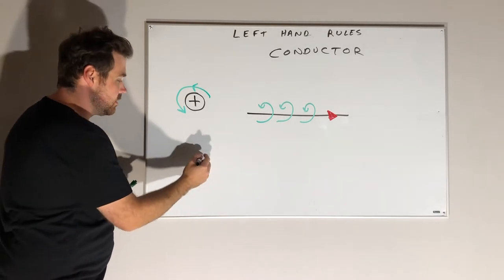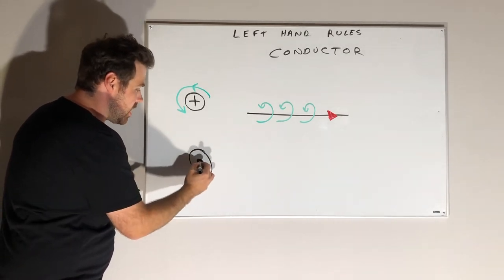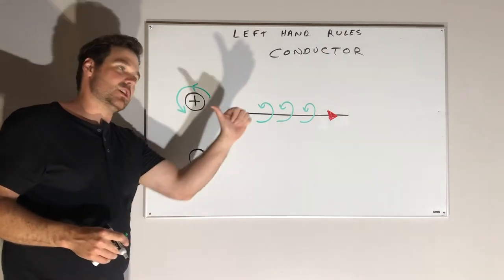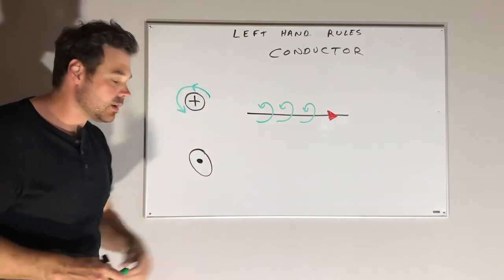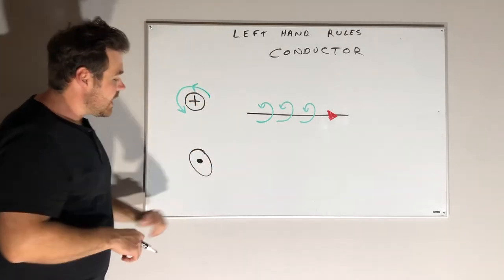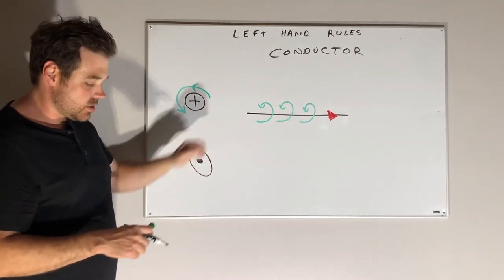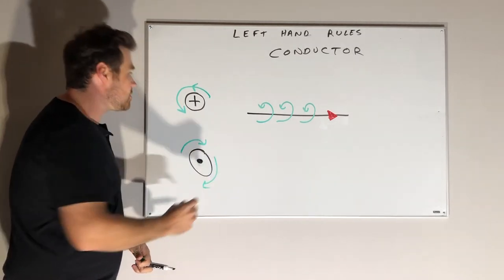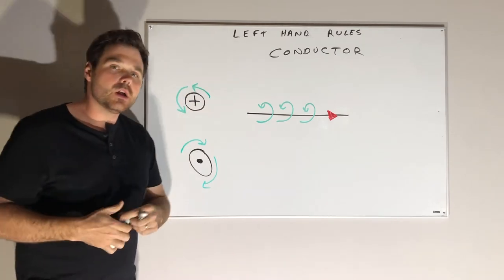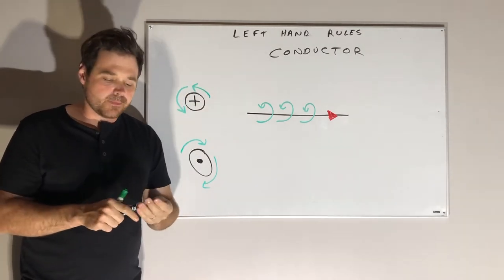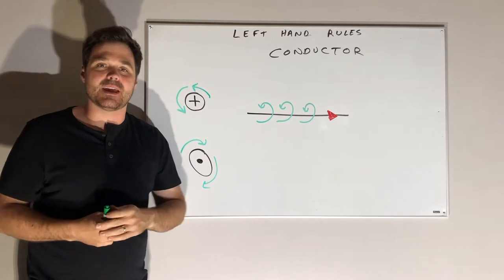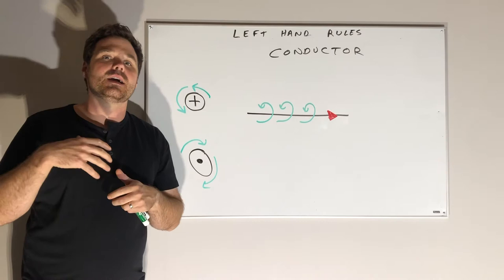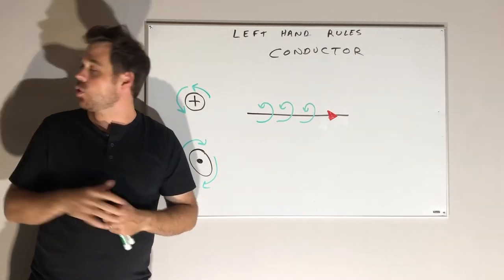Vice versa - if the current is flowing out of the page towards us, this would represent the tip of the arrow coming at you. If we have that thumb coming towards us and our fingers wrap around, our magnetic flux wraps around in the opposite direction. So that's our left-hand conductor rule - pretty common rule, and it's going to come up again later, especially when we get into how transformers build up magnetic fields and how motors generate torque.